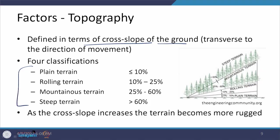There are four classifications based on cross slope values. If it is less than or equal to 10 percent, it is plain. If it is 10 to 25 percent, it is rolling. If it is 25 to 60 percent, it is mountainous. If it is more than 60 percent, it is steep terrain. As these values increase, the terrain becomes more challenging. In plain terrain everything is more comfortable, but in steep terrain you encounter ups and downs creating various frictions in terms of traction and steering.